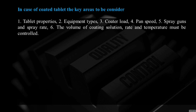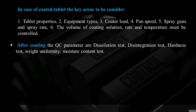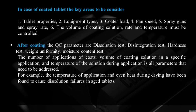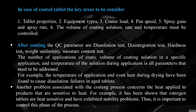For coated tablets, the key areas to be considered are tablet properties, equipment type, coater load, pan speed, spray gun and spray rate, volume of coating solution, rate, and temperature. After coating, quality control parameters include dissolution test, disintegration test, hardness test, weight uniformity, moisture content, number of coat applications, volume of coating solution per application, and temperature of solution during application. Temperature of application and heat during drying have been found to cause dissolution failures in aged tablets. Heat-sensitive products like estrogen tablets have exhibited stability problems, so it is important to control this aspect of the process.